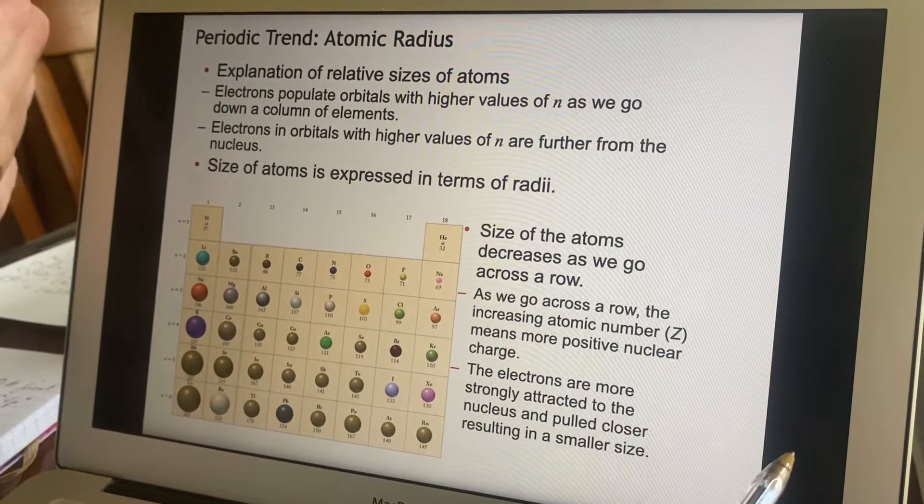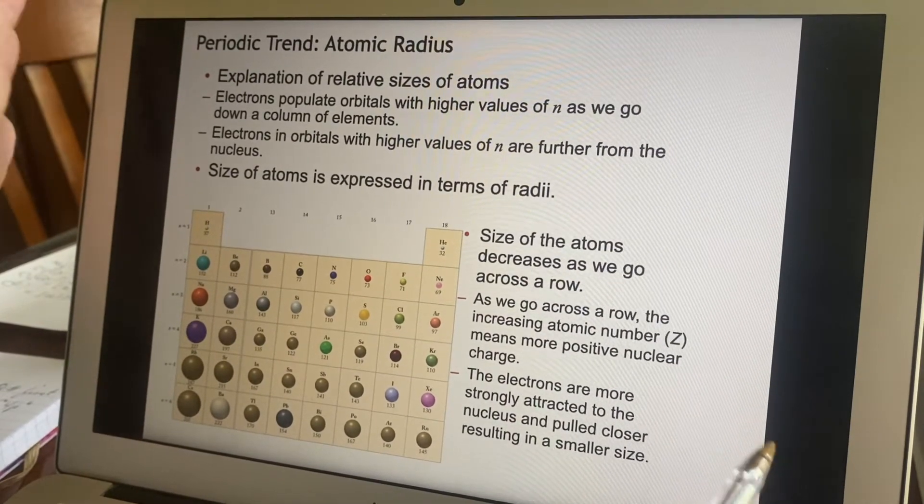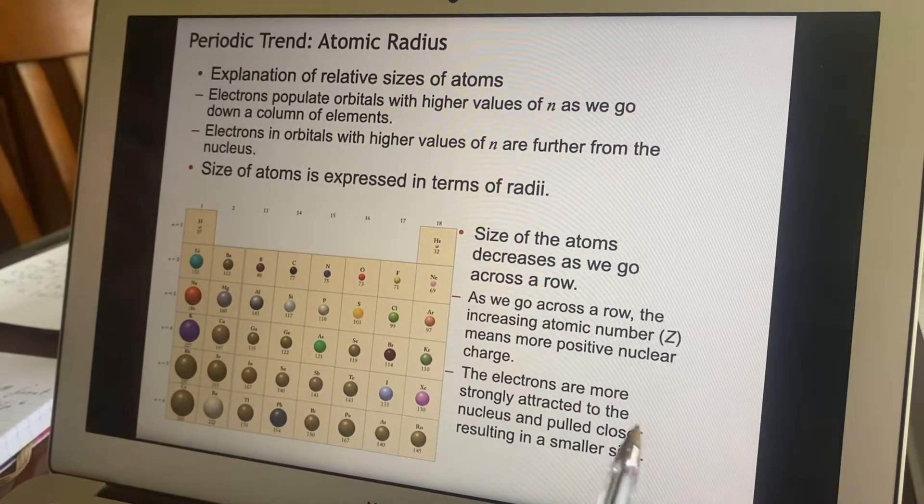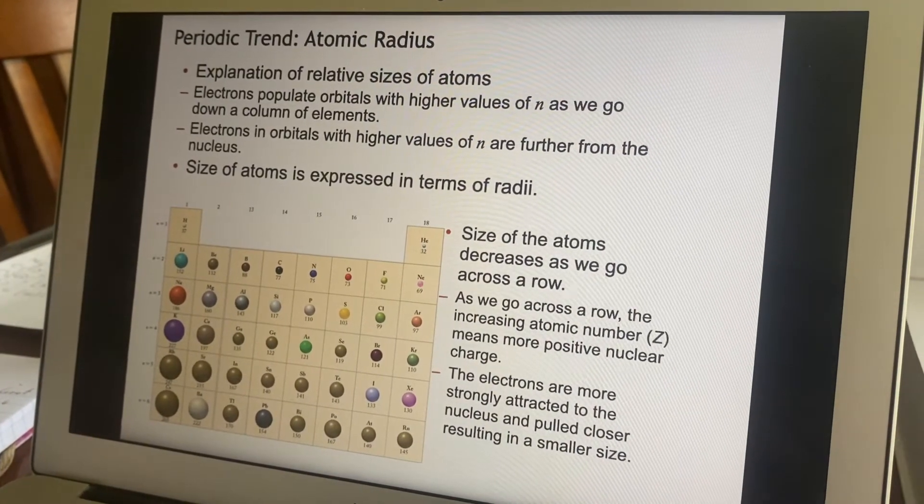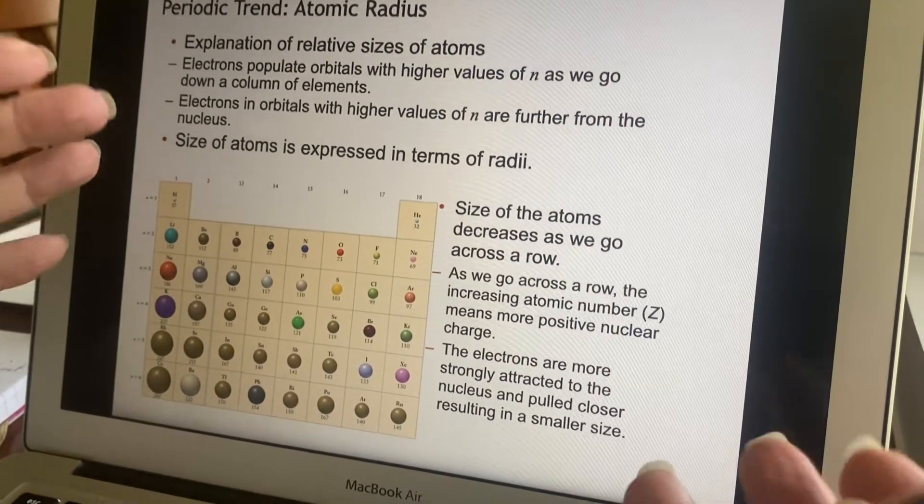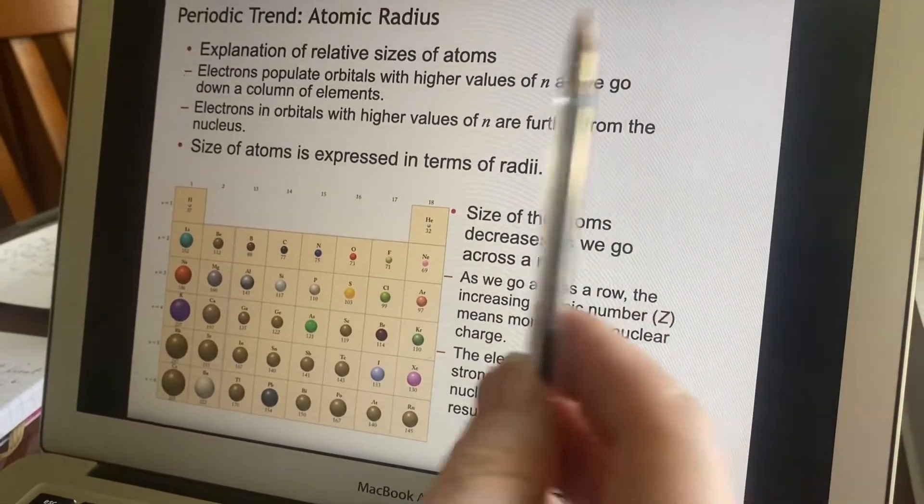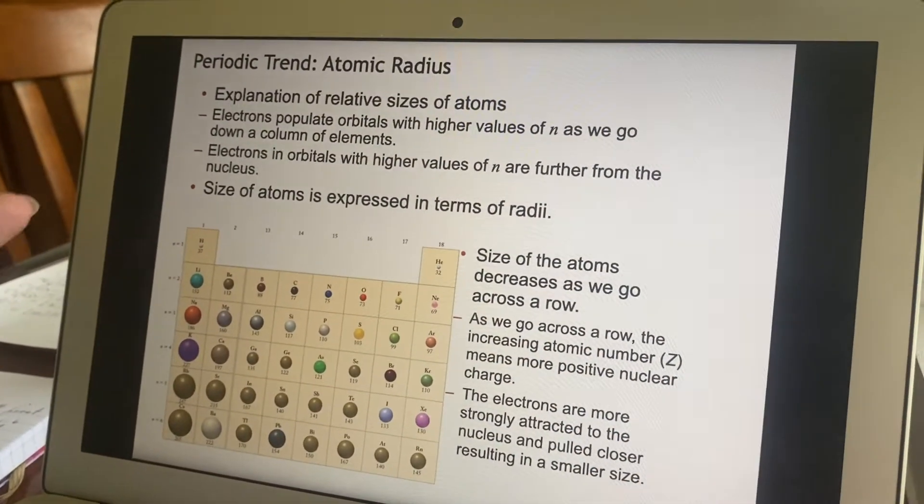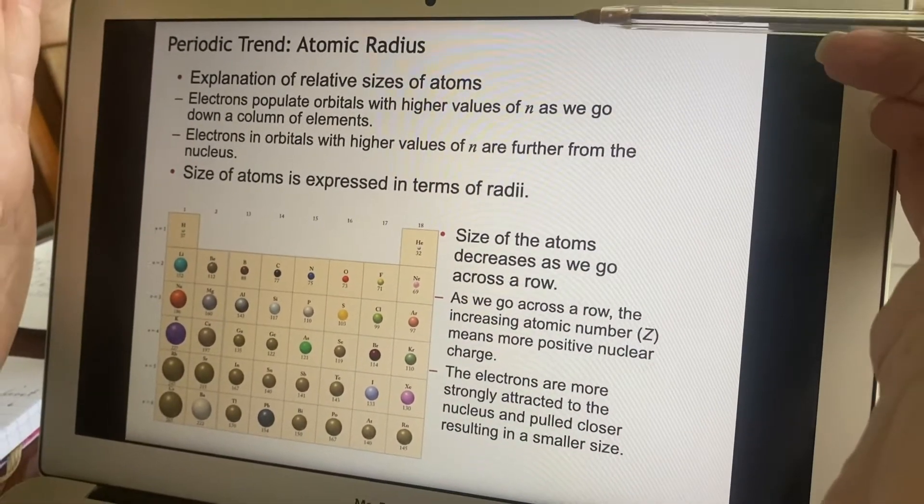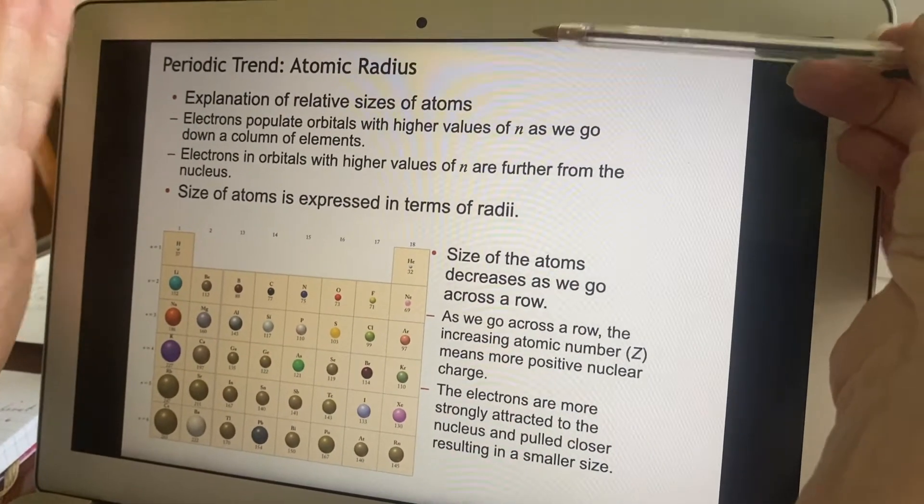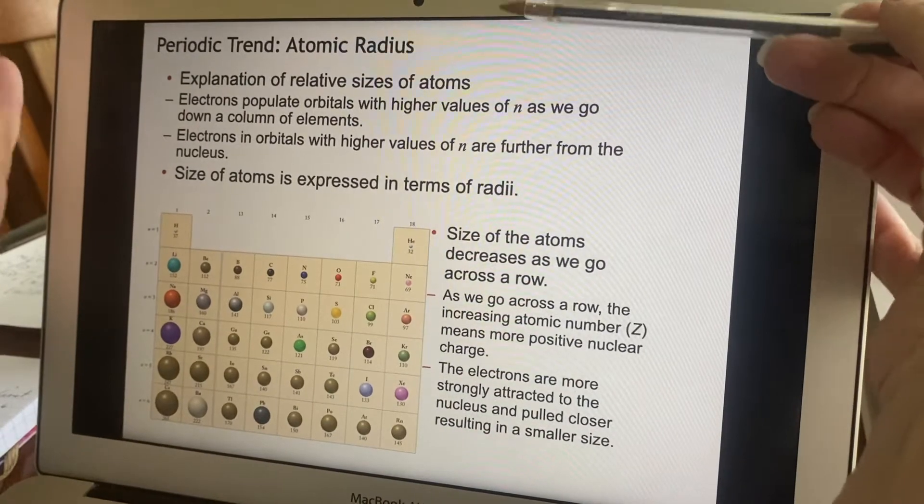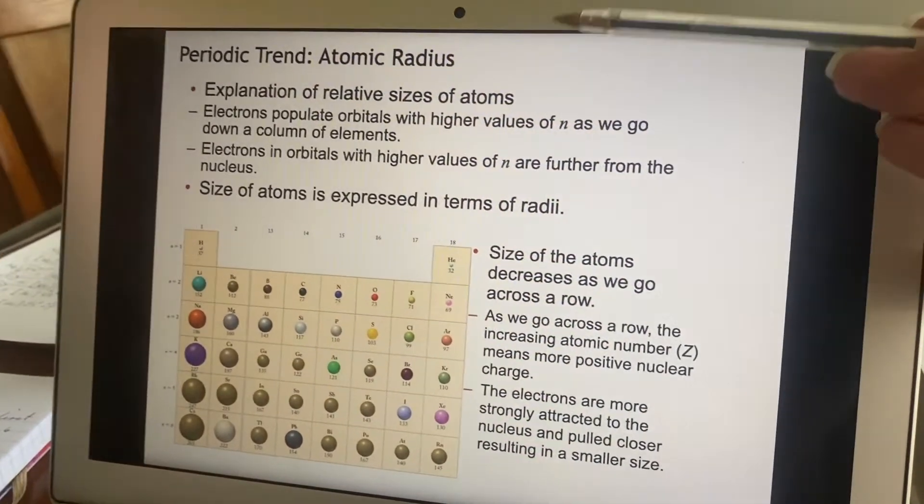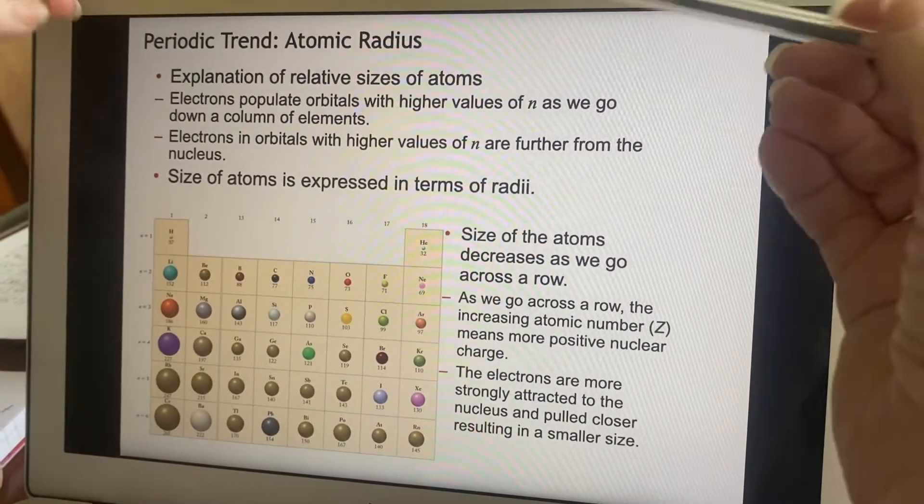When we introduced the periodic table, we talked about how Mendeleev said, 'Hey, maybe I shouldn't just put these all in one big long line by how massive they are. I need to also stack them up according to things that have similar properties.' Now this is a property that he didn't even know about at the time, but it turns out it follows along in the periodic table just the way he would have liked to have seen.